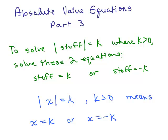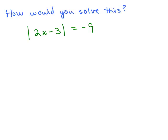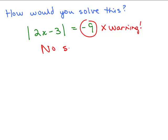Now we're going to look at the example where k is not greater than 0. Look at this example: the absolute value of 2x minus 3 is equal to negative 9. Notice this time you have an absolute value equaling a negative number. That's impossible, because the absolute value of something is greater than or equal to 0 — we're talking about distance. So this is a big warning: you cannot have an absolute value equaling a negative number. Stop and just write no solution.